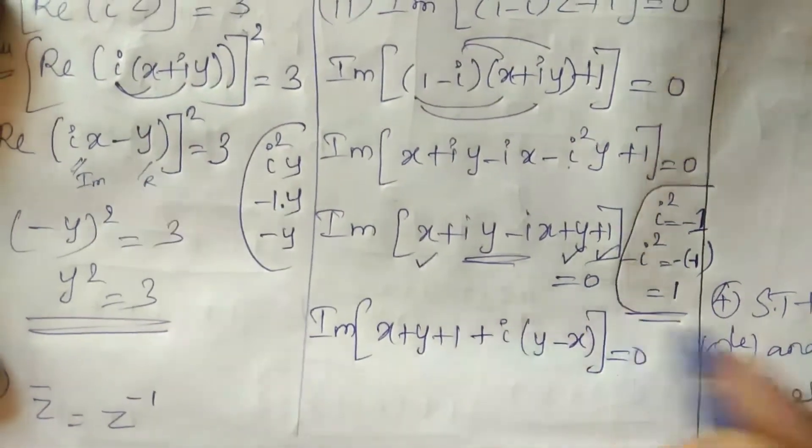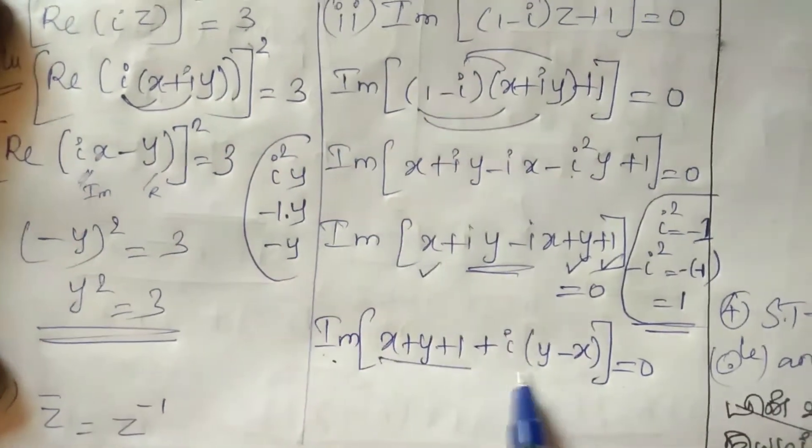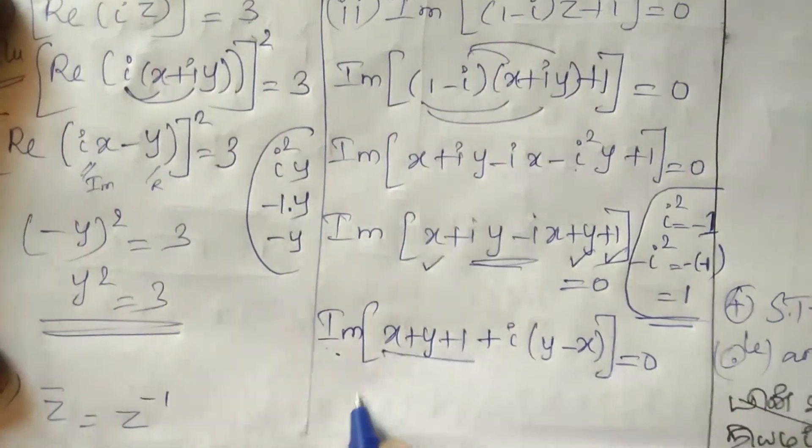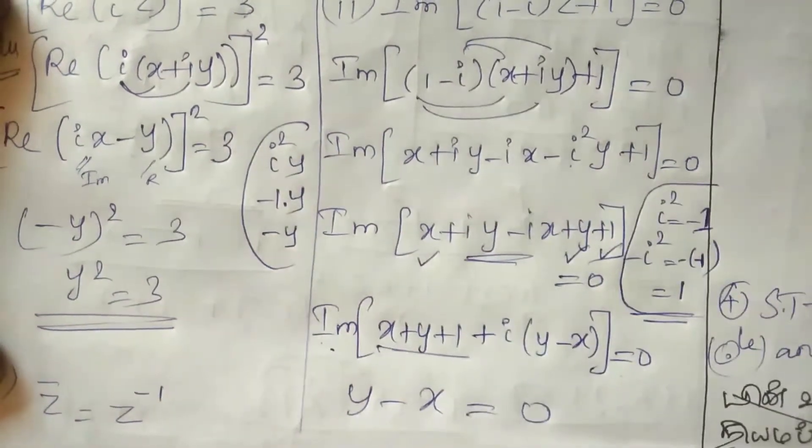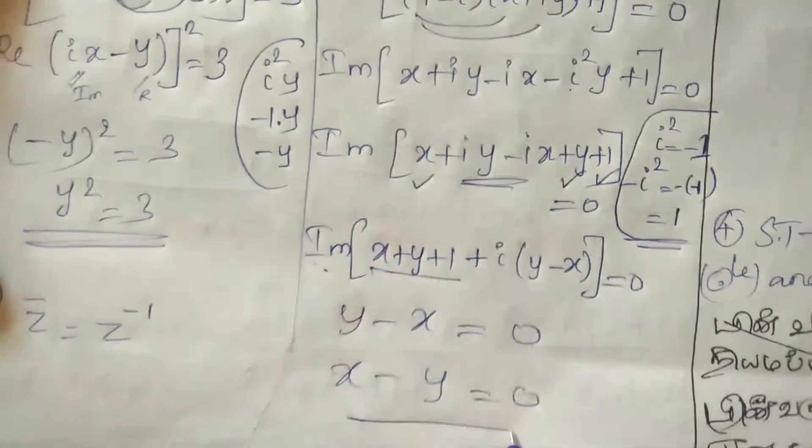So in the question, the real part gives X plus Y plus 1 equal to 0, and imaginary gives Y minus X equal to 0. Therefore X minus Y equal to 0.